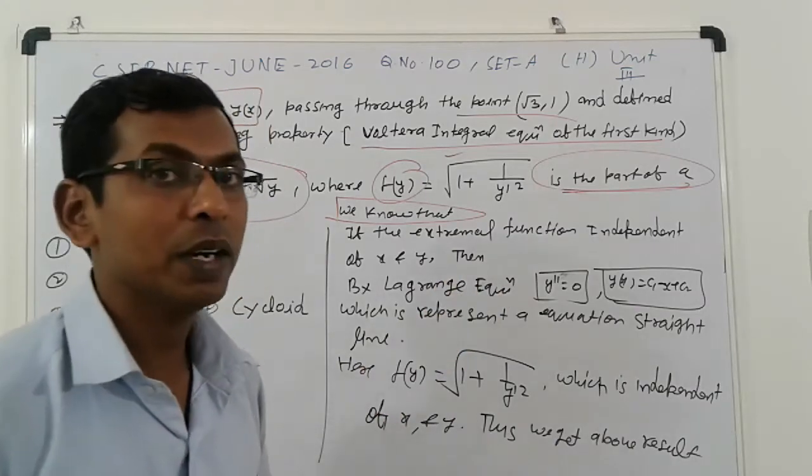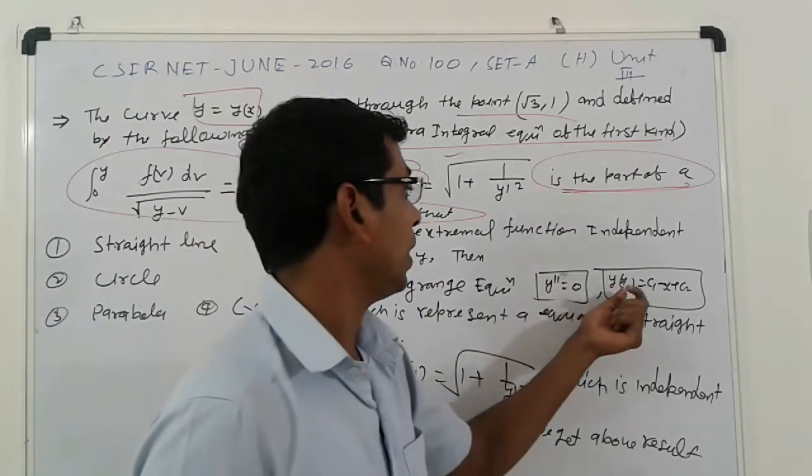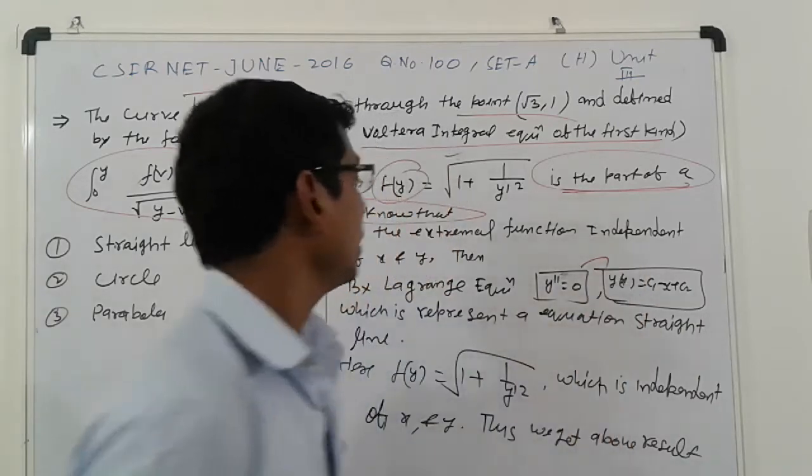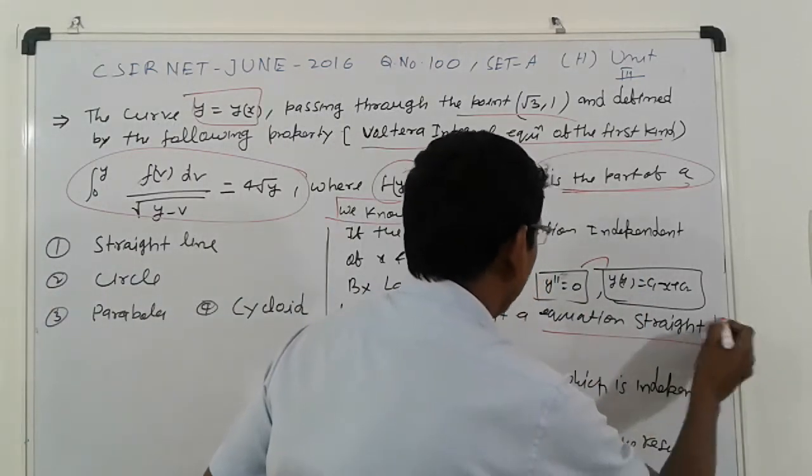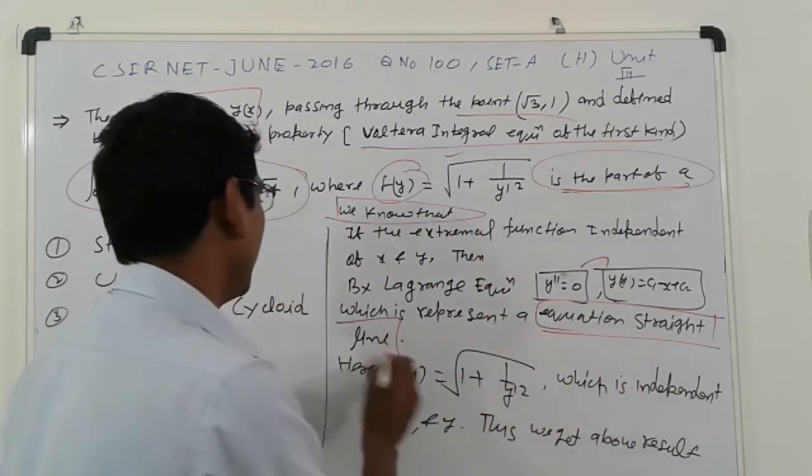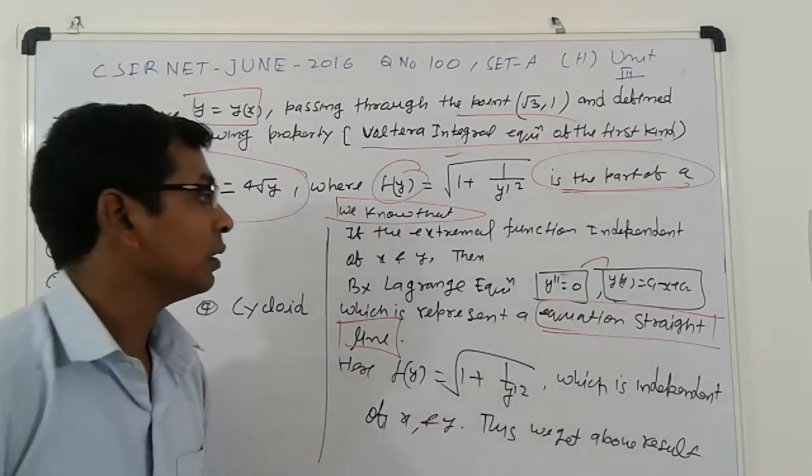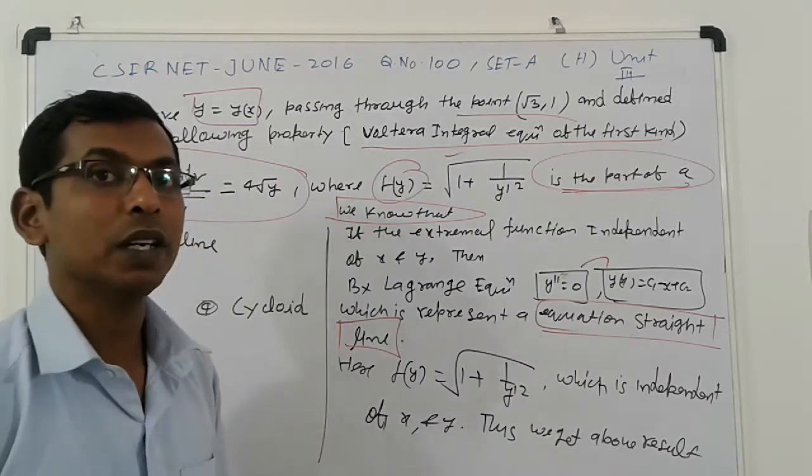So Lagrange equations: y double dash equal to 0, y prime equal to c1. That is the solution. It means which is represented the equation of straight line. Free from x and y, that case, extremal represented by the equation of straight line.